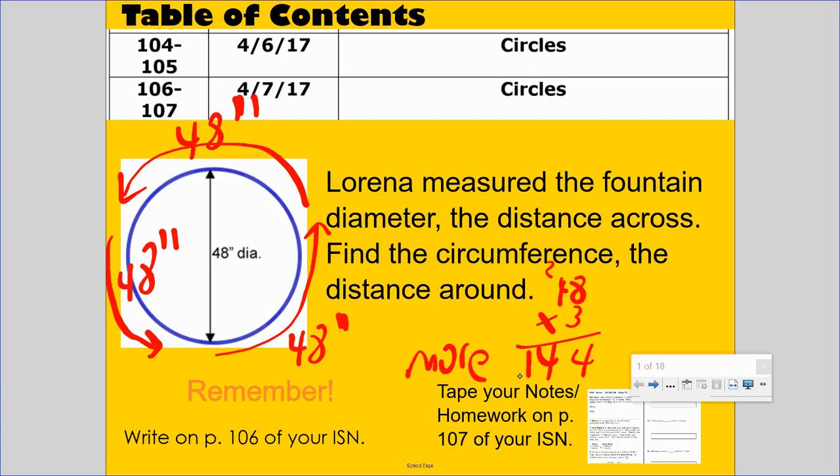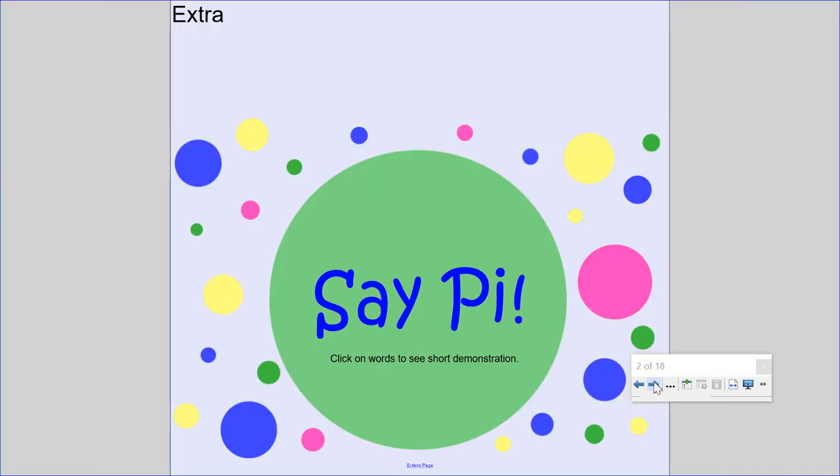So 48 times 3, that's 24 carry the 2, that's 3 times 4 is 12 plus 2 is 144. So it's a little more than 144 inches. In our next lesson, not this one, we'll actually use the formula to find a more accurate measurement of the circumference or distance around.